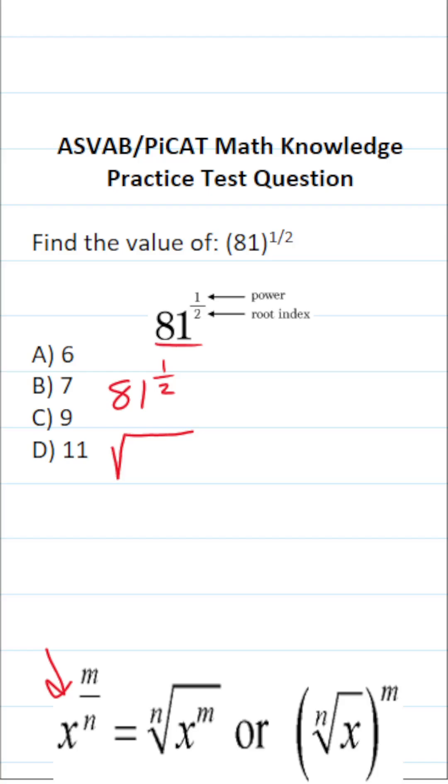81 is called our radicand. We always put our radicand inside the radical. The one here is called our power. You always put the power on the whole number so this is 81 to the first power. This two is called your root index. Your root index always goes here.